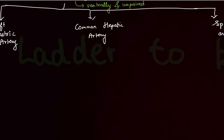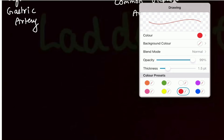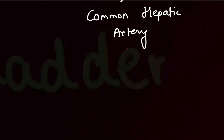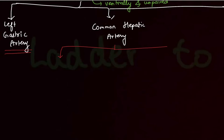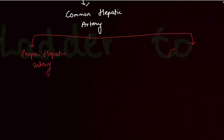Let's know about these branches in detail. The left gastric artery goes to the small curvature of the stomach — we'll cover that in a few minutes. First, let's do the common hepatic artery. The common hepatic artery gives off two major branches: the first is the proper hepatic artery, and the second is the gastroduodenal artery.